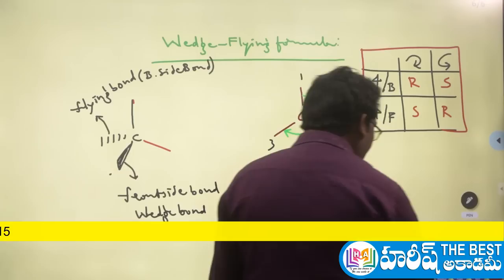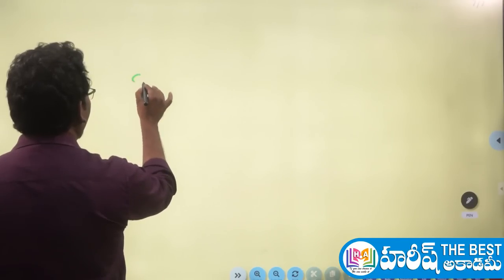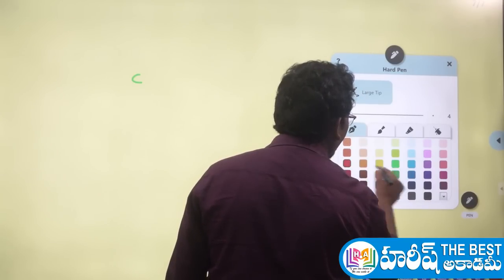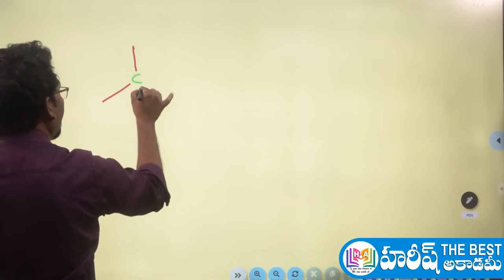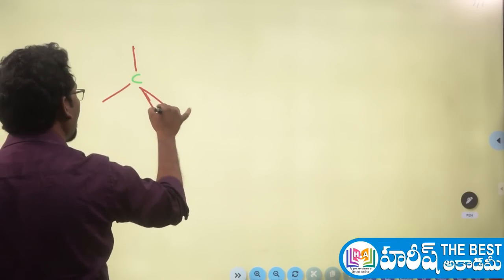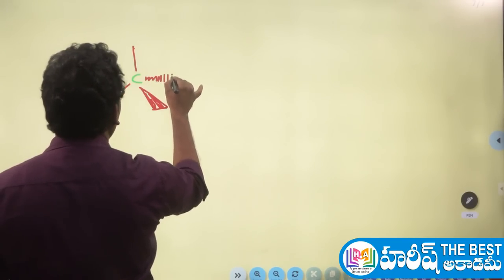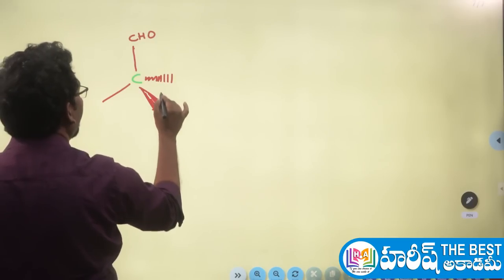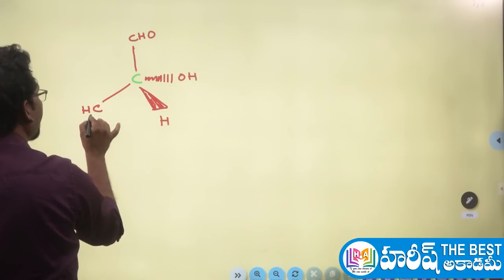If the 4th priority group is on the front-side bond, the rule reverses. For another example with aldehyde, hydrogen, hydroxyl, and methyl in a wedge-flying formula, after priorities are given, check whether the 4th group is on the wedge (front) or flying (back) bond, and apply the 4/F or 4/B rule accordingly to determine R or S configuration.